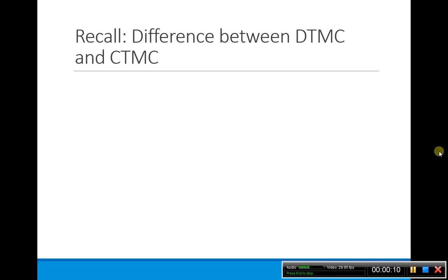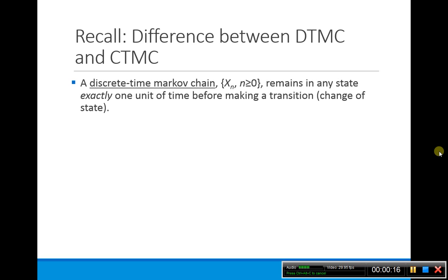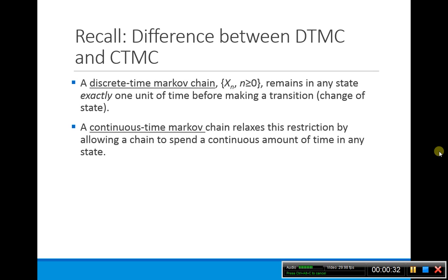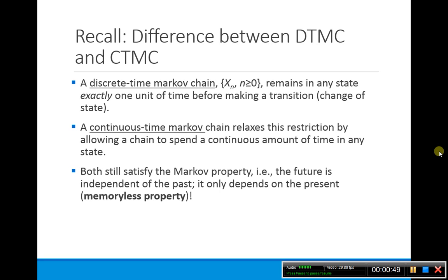Just to remind you what we've already talked about in week 1 — the differences between a discrete time Markov chain and a continuous time Markov chain. In a discrete time Markov chain, it has discrete time in increments, so it remains in any state exactly one unit of time before making a transition. A continuous time Markov chain relaxes this restriction, so you can spend a continuous amount of time in a particular state before transitioning. Both still satisfy the Markov property — they are independent of the past and memoryless.